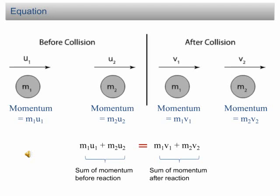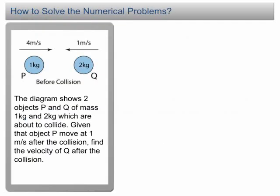We can use this equation to solve almost all problems involving collisions or explosions in SPM physics. The diagram shows two objects P and Q of mass 1 kg and 2 kg which are about to collide. Given that object P moves at 1 m/s after the collision, find the velocity of Q after the collision. When solving numerical problems, the first thing to do is list down all the information given — this is an important step, do not skip it.